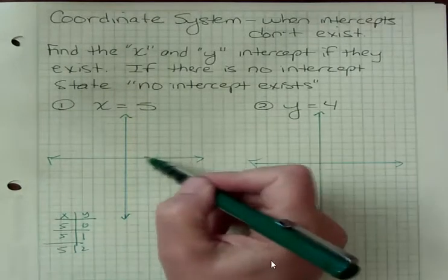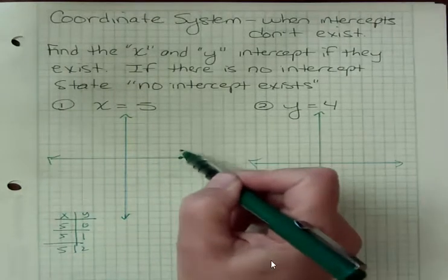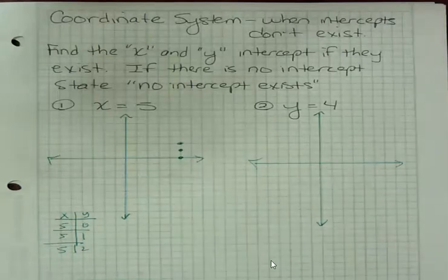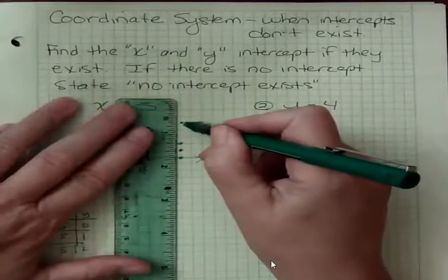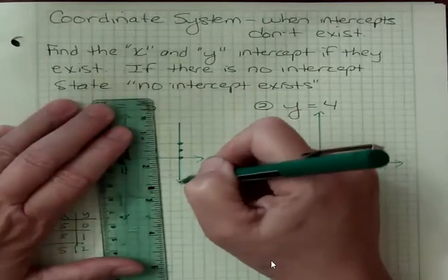So if I go 1, 2, 3, 4, 5, 0, 1, 2, whatever values I picked for y, you can see that I have a vertical line at 5.